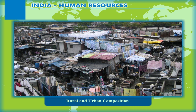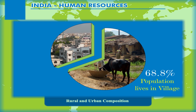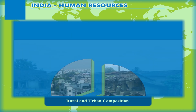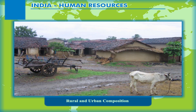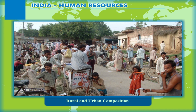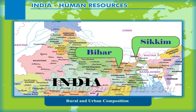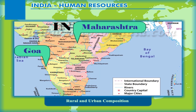Composition of population by their respective places of residence is an important indicator of social and economic characteristics. This becomes even more significant for a country where about 68.8% of its population lives in villages. India has 6,40,867 villages according to Census 2011, out of which 5,97,608 (93.2%) are inhabited villages. However, the distribution of rural population is not uniform throughout the country. States like Bihar and Sikkim have very high percentage of rural population, while states of Goa and Maharashtra have only a little over half of their total population residing in villages.